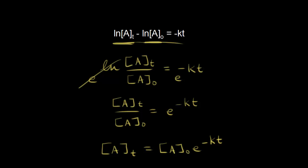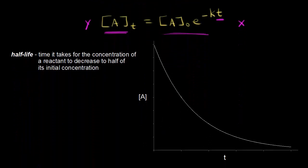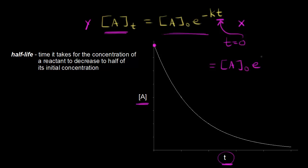Now it's a little bit easier to think about the graph. We can put the concentration of A on the y-axis and time on the x-axis. This is in the form of an exponential decay — I've graphed an exponential decay graph just to show you what it looks like. Let's think about this point on our graph: when time is equal to zero, what is the concentration? You would just plug in time equals zero, so you would have your concentration equal to the initial concentration times e to the zero.